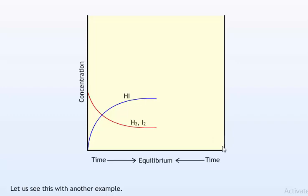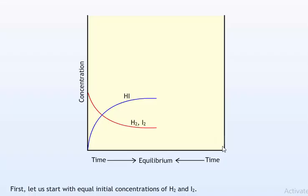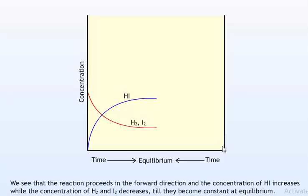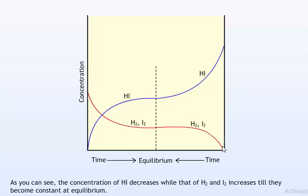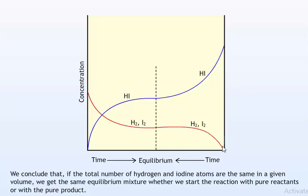Let us see this with another example. Consider the reaction: H2 + I2 ⇌ 2HI. Starting with equal initial concentrations of H2 and I2, the reaction proceeds in the forward direction — concentration of HI increases while concentration of H2 and I2 decreases, until they become constant at equilibrium. Now starting with HI and making the reaction proceed in reverse, the concentration of HI decreases while that of H2 and I2 increases, until they become constant at equilibrium. We conclude that if the total number of hydrogen and iodine atoms are the same in a given volume, we get the same equilibrium mixture whether we start with pure reactants or with the pure product.